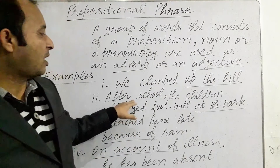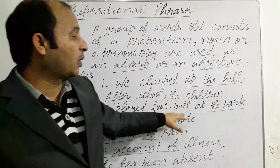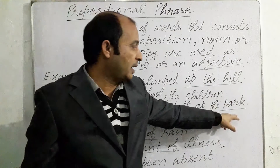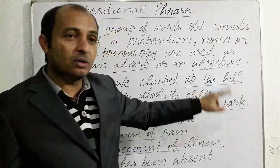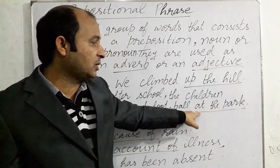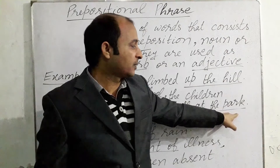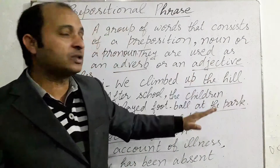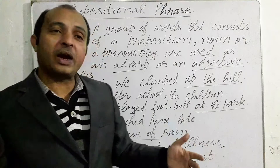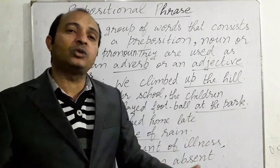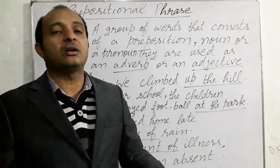The next example: 'After school, the children played football at the park.' Here 'at the park' is underlined as the prepositional phrase, because it consists of a preposition 'at' and the noun 'the park.' We see how prepositional phrases are added to the sentence for complete understanding of the idea behind the sentence.